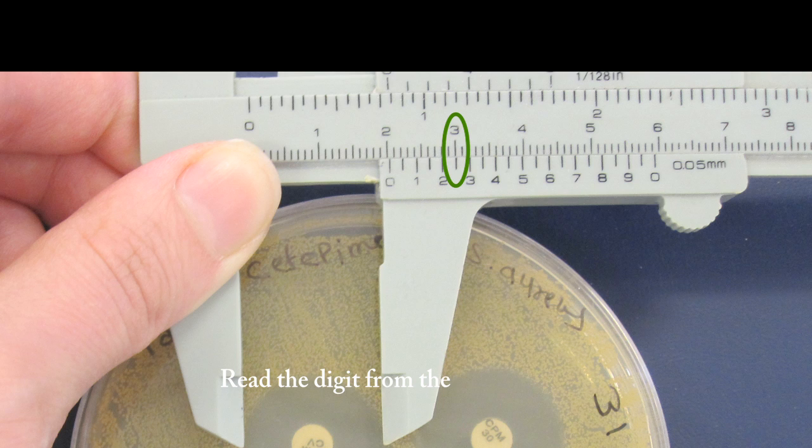Read the digit from the vernier scale. The closest reading here is 2.5.